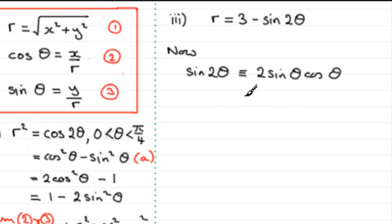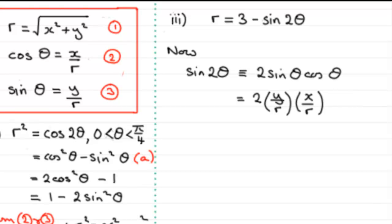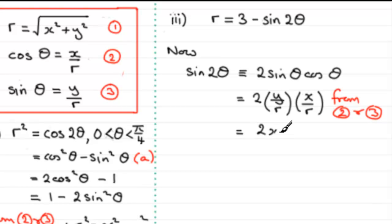Using equations two and three, sine theta is y over r and cos theta is x over r, so sin(2θ) equals two times (y over r) times (x over r), which simplifies to 2xy over r squared. Let's call this result B.